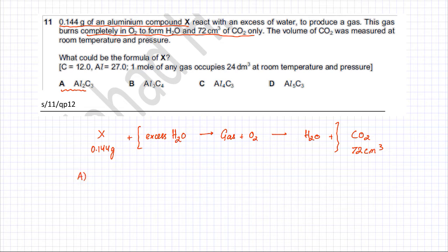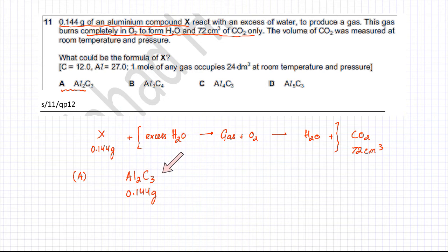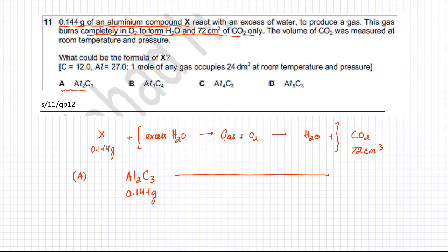For option A, X is AL₂C₃ and the mass is 0.144 grams. There is no carbon being added anywhere in between, so all the carbon in the CO₂ comes from compound X. AL₂C₃ has three carbons, so three CO₂ molecules will be produced. The ratio of AL₂C₃ to CO₂ is 1:3.